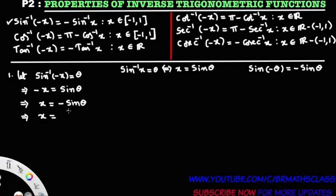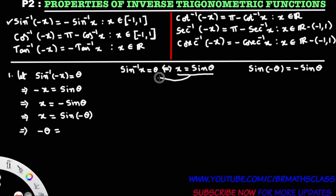So here, minus sine theta, we can write as sine of minus theta. From this, what is minus theta? From the definition of inverse sine function — if x equals to sine theta then theta equals to sine inverse of x. In the same way, if x equals to sine of minus theta, then minus theta equals to sine inverse of x. Multiply with minus on both sides — theta equals to minus sine inverse x.